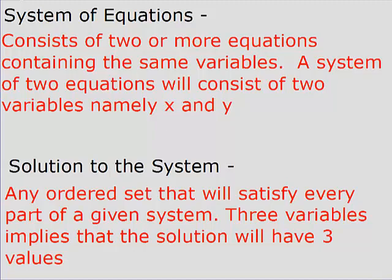A solution is any ordered set that will satisfy every part of a given system. Three variables implies the solution will have three values. So if you have an x, a y, and a z, you need to find values that make the first statement true, the second statement true, and the third statement true. Every part of the system must be satisfied in order for there to be a solution.